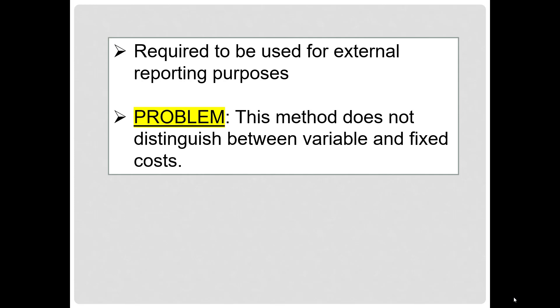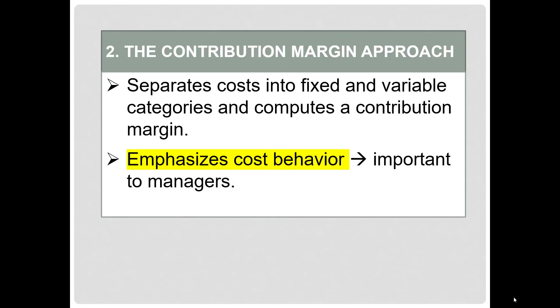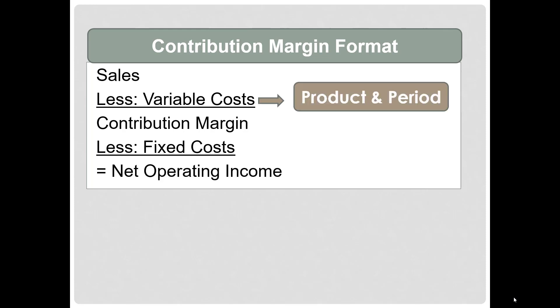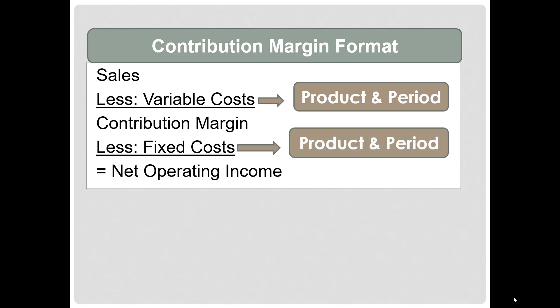This traditional format is required for external reporting, but the problem is it does not distinguish between variable and fixed costs. That leads us to the contribution margin approach, which will separate costs into fixed and variable categories and compute a contribution margin. It puts the emphasis on cost behavior rather than the product versus period distinction. The format is: sales minus variable costs gives you contribution margin, minus fixed costs equals net operating income. Variable costs will include both product and period costs, and likewise, fixed costs will include product and period costs.